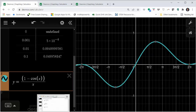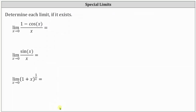Going back to our work, we now know this first limit is equal to zero. I've already set up the work to determine the next two limits. Let's now consider the limit of sine x divided by x as x approaches zero.